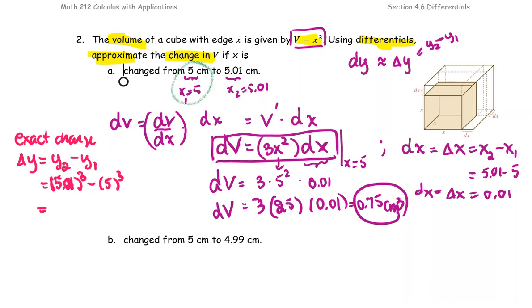For 5.01 to the third, it's about 125.75. And 5 to the third is 125. So the difference is about 0.7515, which is the exact change, where the dV is the approximate change.